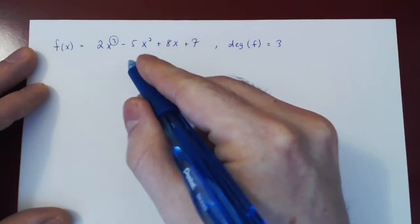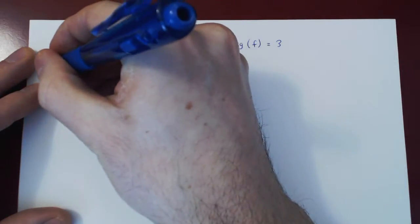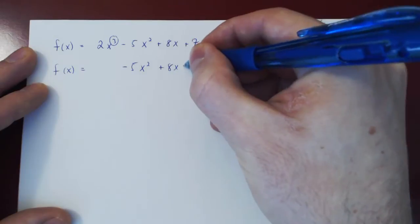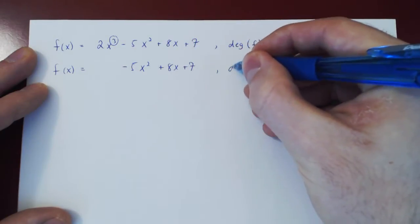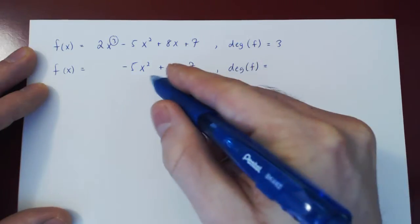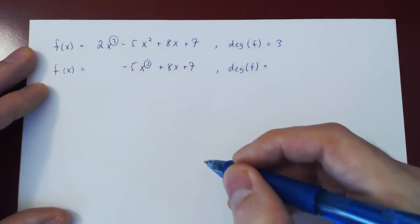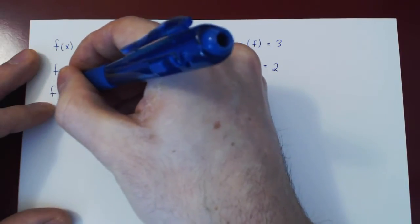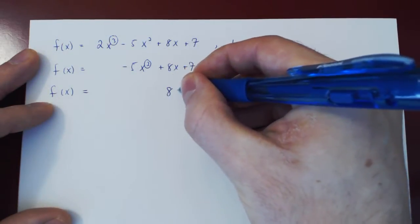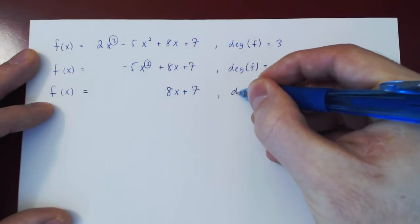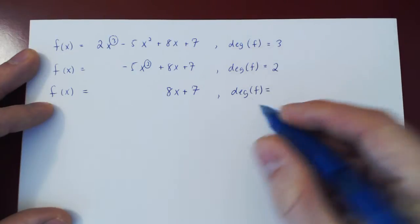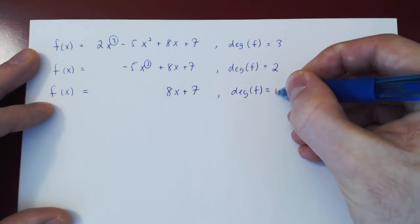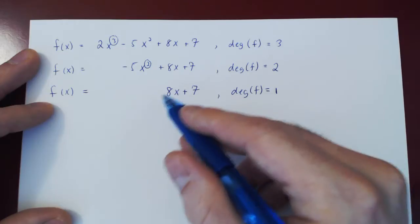What if we dropped the cubic term and kept only the other three terms? So f of x equals negative 5x squared plus 8x plus 7. Now the degree of f is 2, as 2 is the largest power of x. And if we drop that term and only keep 8x plus 7, now we have degree 1, as x is x to the 1, so the largest power of x is 1.